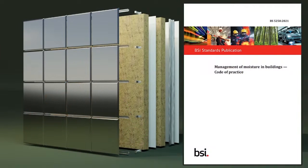BS 5250 was originally introduced in 1975 as a 25-page code of basic data for the design of buildings and the control of condensation in dwellings. Subsequent revisions in 1989, 2002 and 2011 increased the document to well over 100 pages, covering more types of construction and more detail around internal and external environmental conditions. The 2011 edition with 2016 amendments was the final edition focused on condensation control. The new 2021 edition expands its scope to become a management of moisture in buildings code of practice, streamlining and restructuring the guidance into a more coherent document.